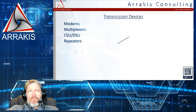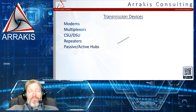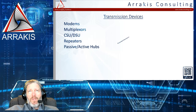A repeater amplifies everything — the good and the bad simultaneously. A multiplexer takes multiple signals, combines them into one signal, sends it, and then the receiving end breaks them back out. The big ones to know are active and passive hubs. An active hub requires an external power source; a passive hub may draw power from the network cable itself. A hub is a multi-port device.